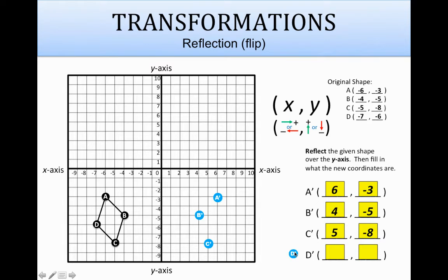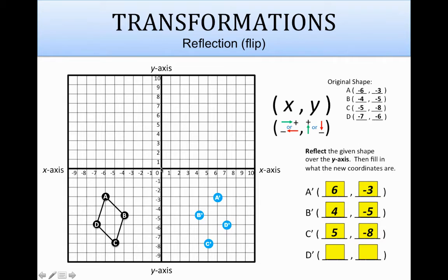Let's grab d prime and put it on d. D is 7 units away from the y-axis, so d prime has to be the same distance away on the other side — 7 away over here. The coordinates for that are 7 to the right, and then 6 down, so that will be a negative 6 for that one.